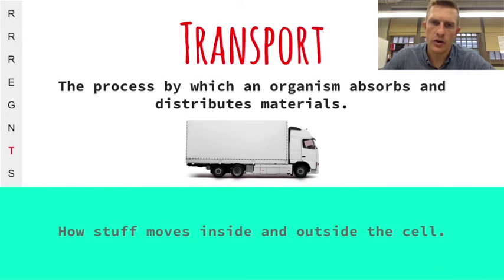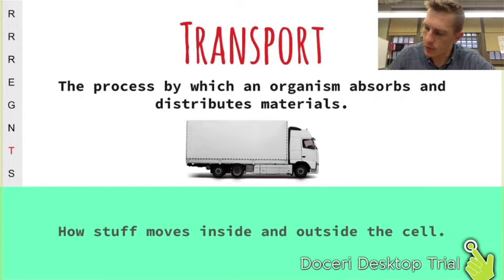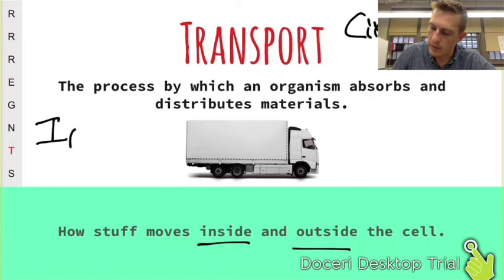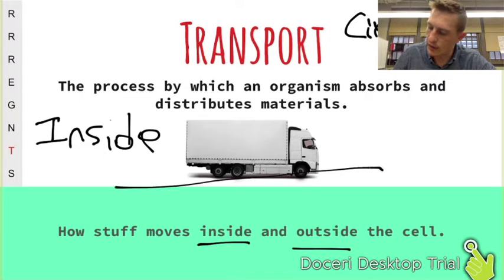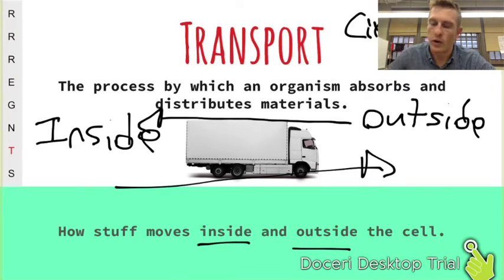Transport is the process by which organisms absorb and distribute materials — it's not the same as locomotion. Sometimes referred to as circulation in multicellular organisms, we'll mostly discuss it as a cellular process: how stuff moves from inside the cell to outside the cell and vice versa. In order for the cell to create things, it has to bring new materials in, so transport covers how cells move things inside and outside.